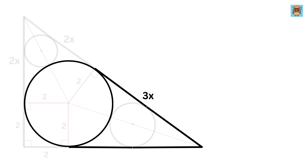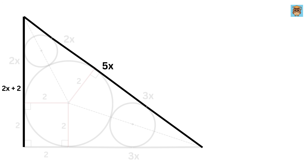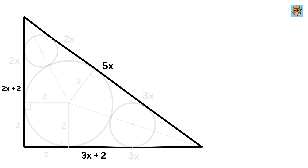Similarly, consider the big circle and these two tangents. They are also drawn from the same external point, which is this vertex. Hence, if this is 3x, then the length of this piece will also be equal to 3x. Therefore, the length of the hypotenuse in terms of x will be 2 + 3 = 5x. Then the length of the vertical side will be 2x + 2, and the length of the horizontal side will be 3x + 2.